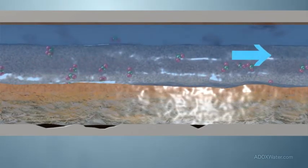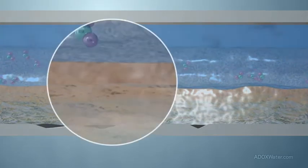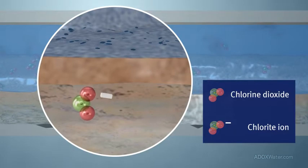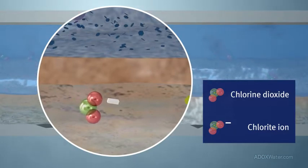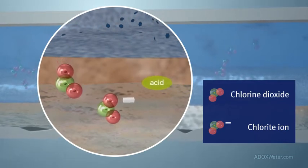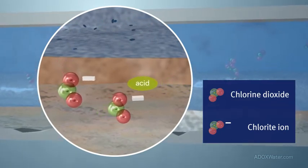In addition, as chlorine dioxide reacts as a biocide, chloride ion is formed as a ClO2 disinfection byproduct. When chloride ion encounters acids, such as those produced by SRBs and APBs, chlorine dioxide is reformed in situ.